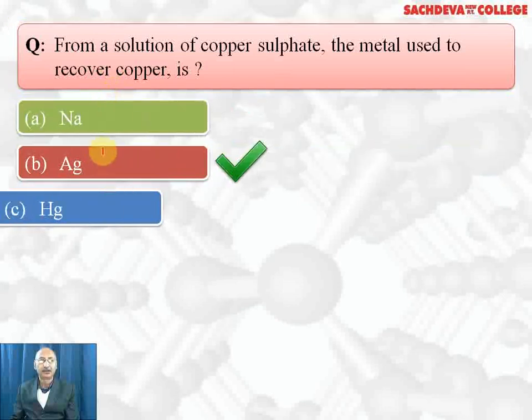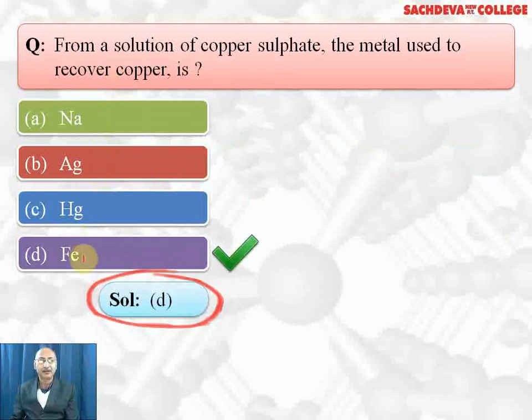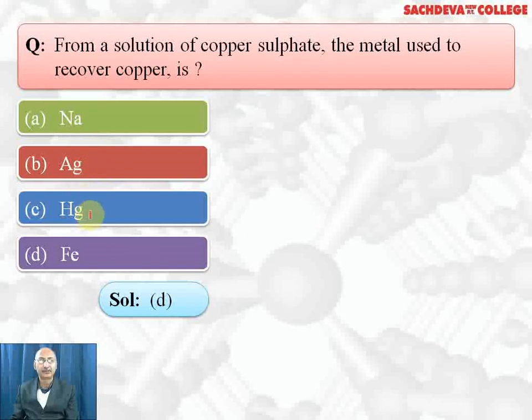Correct answer is iron because iron is more reactive than copper. Sodium no doubt is more reactive than copper but it will react with water and catch fire in the presence of water, hydrogen gas will be liberated. Silver is less reactive than copper so it cannot be used. Mercury also cannot displace copper, it's less reactive. Only iron is most suitable for displacing copper from copper sulfate solution.